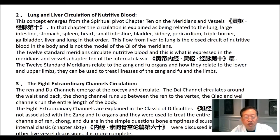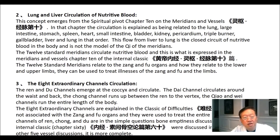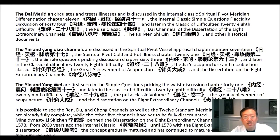Three: the 8 extraordinary channels circulation. The ren and du channels emerge at the coccyx and circulate. The dai channel circulates around the waist and back. The chong channel runs up between the ren and du to the vertex. The chiao and wei channels run the entire length of the body. The 8 extraordinary channels are explained in the classic of difficulties — not associated with the zang and fu organs, and used to treat the entire body. The three channels of ren, chong, and du are discussed in the simple questions bone emptiness discussion, chapter 60, in relation to the other five vessel discussions. The dai meridian is discussed in the internal classic spiritual pivot meridian differentiation, chapter 7.